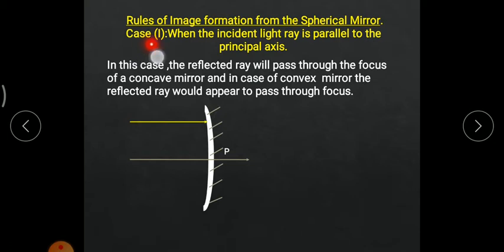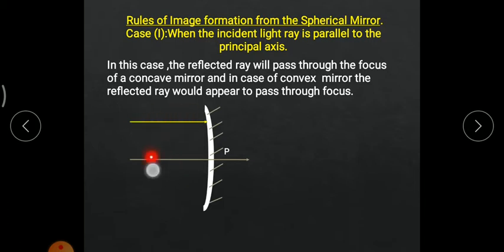Now, what does the first statement mean — when the incident light ray is parallel to the principal axis? This is the principal axis and this is the incident light ray. As you can see, this incident light ray is parallel to the principal axis. Whenever the incident light is parallel to the principal axis, the reflected ray — this green line — will always pass to one particular point. That particular point is known as focus.